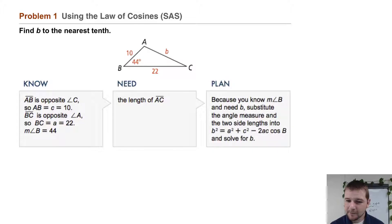Our plan? Because we know the measure of angle B and need side length B, substitute the angle measure and the two side lengths into this form of the law of cosines. B squared equals A squared plus C squared minus 2ac times the cosine of B and solve for B.